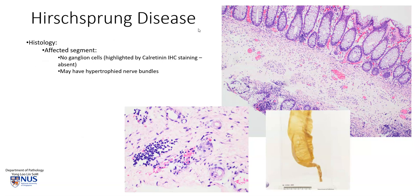There will be a separate talking slide on the microscopic features of Hirschsprung disease, but just in a nutshell, the affected segment will have no ganglion cells, both in the submucosal plexus as well as the myenteric plexus in the muscularis propria. Here we have colonic mucosa, submucosa, and there are some prominent nerve bundles in the submucosal region. However, there are no ganglion cells, and this is what we would see in the aganglionic shrunken segment.